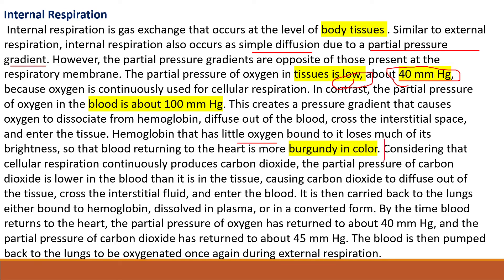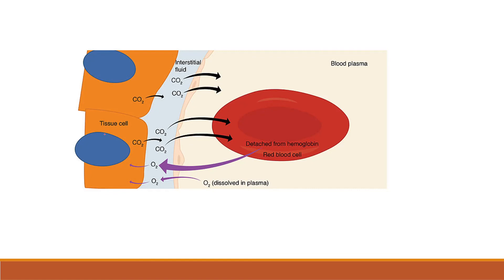This is the oxygen exchange in internal respiration. Cellular respiration produces carbon dioxide, so the partial pressure of carbon dioxide is lower in the blood and higher in the tissue. Carbon dioxide moves from the tissue into the blood, carried by hemoglobin, dissolved in plasma, or as bicarbonate.